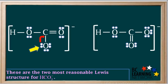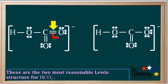Now looking at structure 1 on the left, if one of the lone pairs from the bottom oxygen atom left the atom and formed another bond with the carbon atom, the carbon atom would temporarily have five bonds. So this would cause the electrons from one of the double bonds to leave the carbon atom and form another lone pair on the oxygen atom to the right.